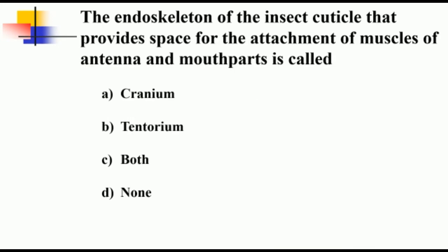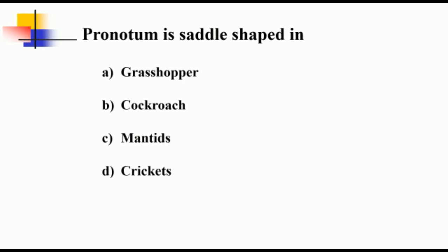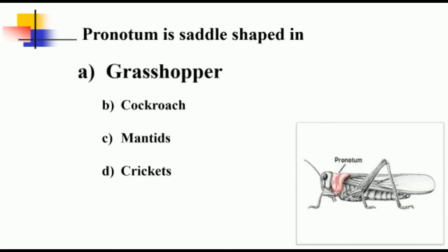The endoskeleton of the insect cuticle that provides space for the attachment of muscles of antenna and mouthparts is called tentorium. Pronotum is saddle-shaped in grasshopper. Here you can see the saddle-shaped pronotum in case of grasshopper, and cockroaches the pronotum is shield-like.